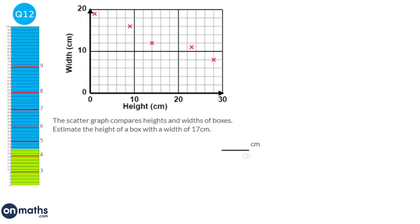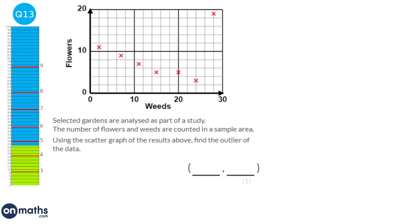Whenever we have a scatter graph we'll be drawing a line of best fit. We're looking for an estimate of the height of a box with width 17, so we draw a line up from 17, then across to the line of best fit and down. The scale goes up in twos, so this gives a value of 3. An outlier is a point which doesn't fit the pattern — all other coordinates follow a nice trend but one point is nowhere near it.